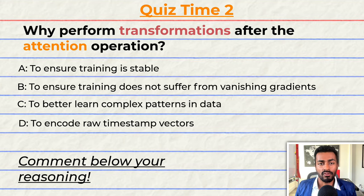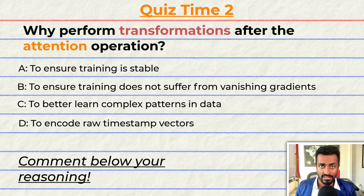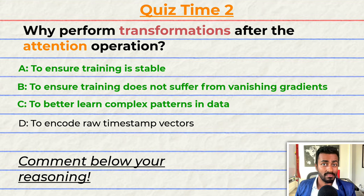Quiz time — have you been paying attention? Why perform transformations after the attention operation? A: to ensure training is stable. B: to ensure training doesn't suffer from vanishing gradients. C: to better learn complex patterns in data. Or D: to encode raw timestep vectors. Note that multiple options may be correct. The answers are A, B, and C. Why are A, B, and C correct? Let me know your reasoning in the comments below and let's have a discussion.